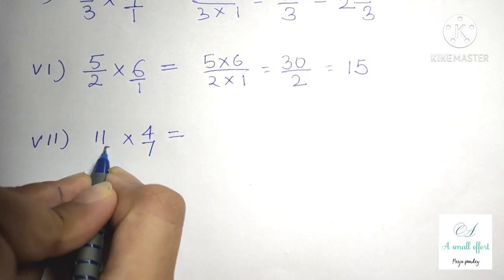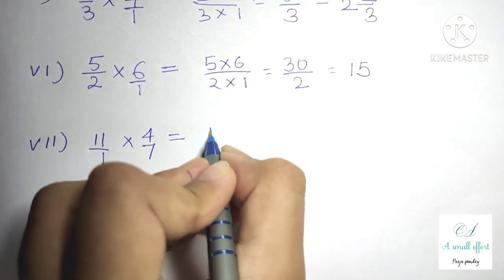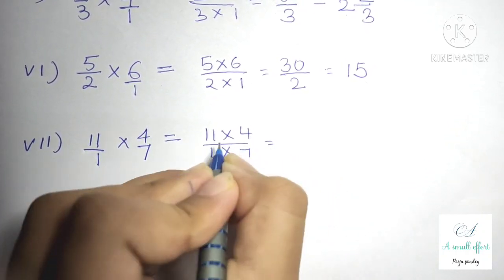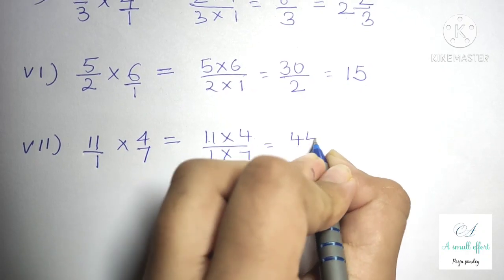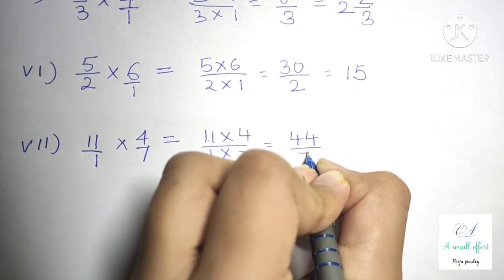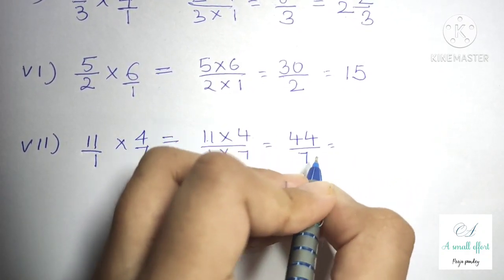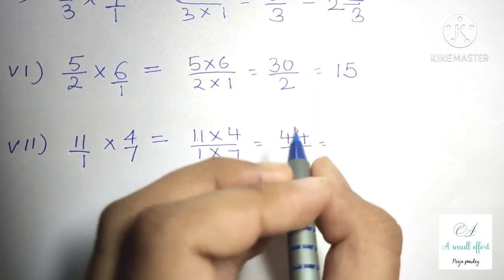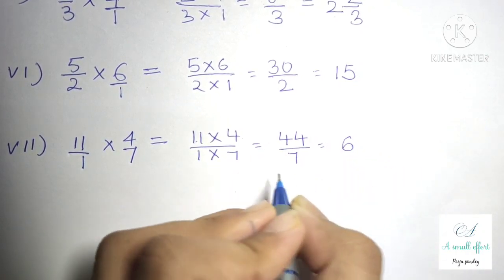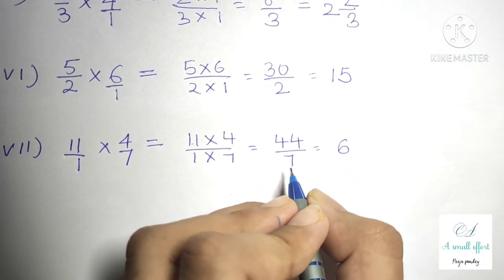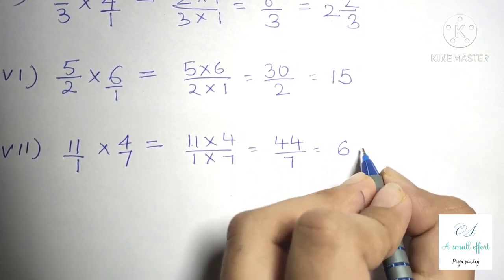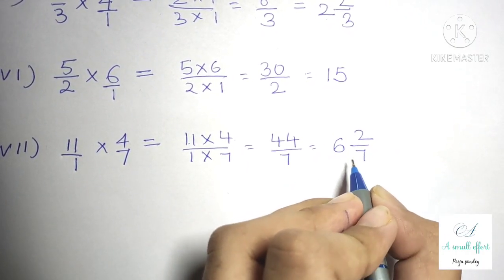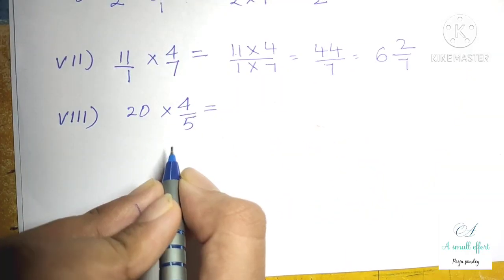Question number 3 part 7 is 11 into 4 by 7. We can write 11 as 11 by 1, multiply numerator with numerator and denominator with denominator: 11 fours are 44 by 7. It can't be reduced to lowest form, so we write as mixed fraction: 7 sixes are 42, so 44 minus 42 is 2, with denominator 7. Our answer is 6 whole 2 by 7.